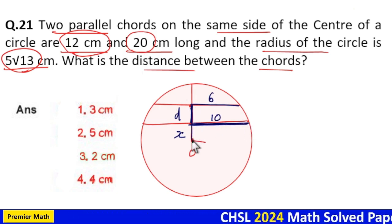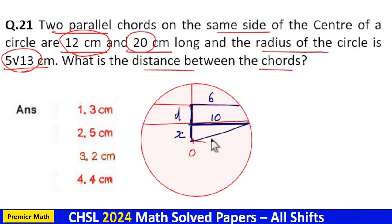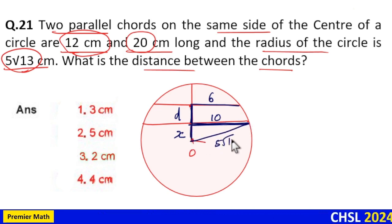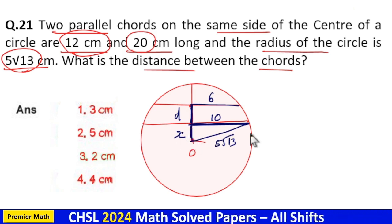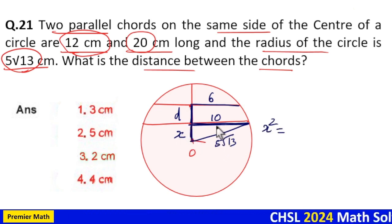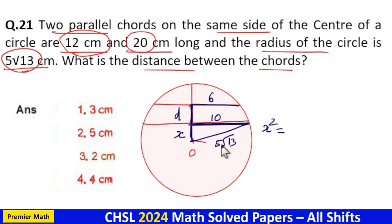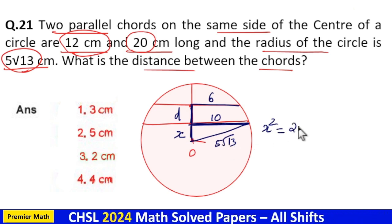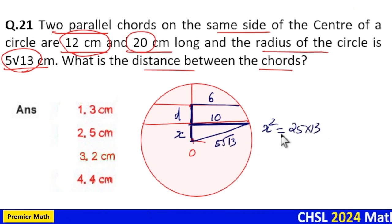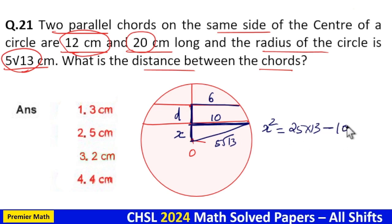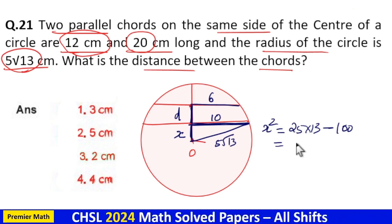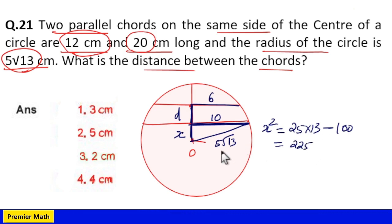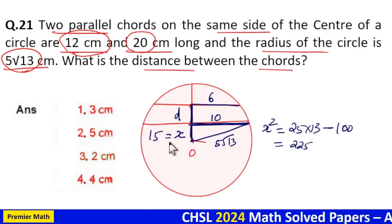From the right triangle formed with the 20 cm chord, x² = (5√13)² − 10² = 25×13 − 100 = 325 − 100 = 225, so x = 15.